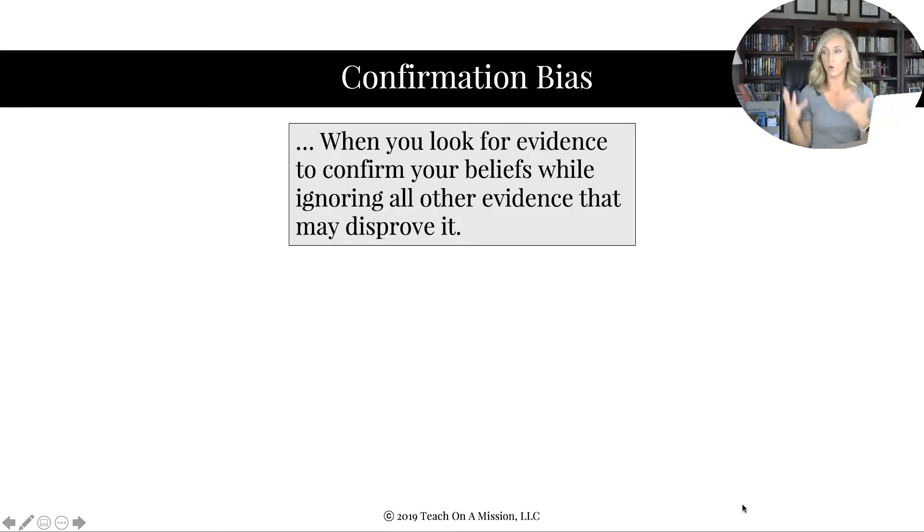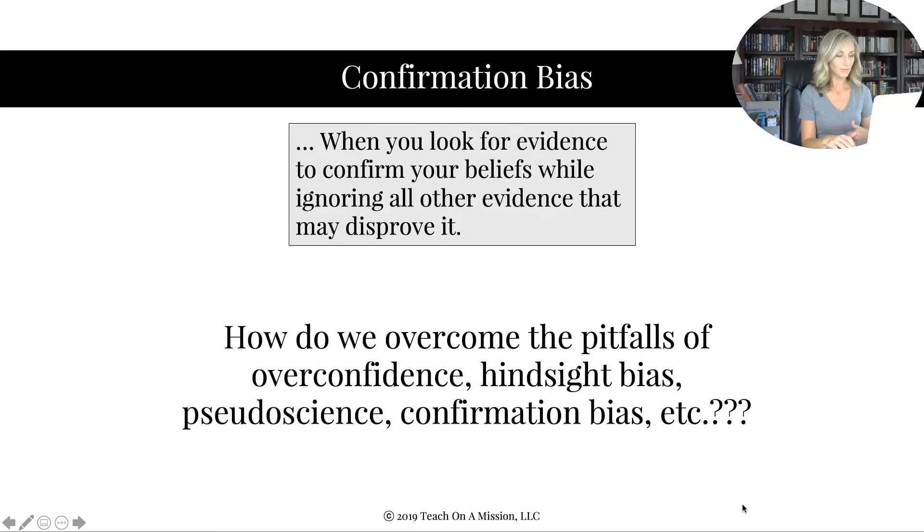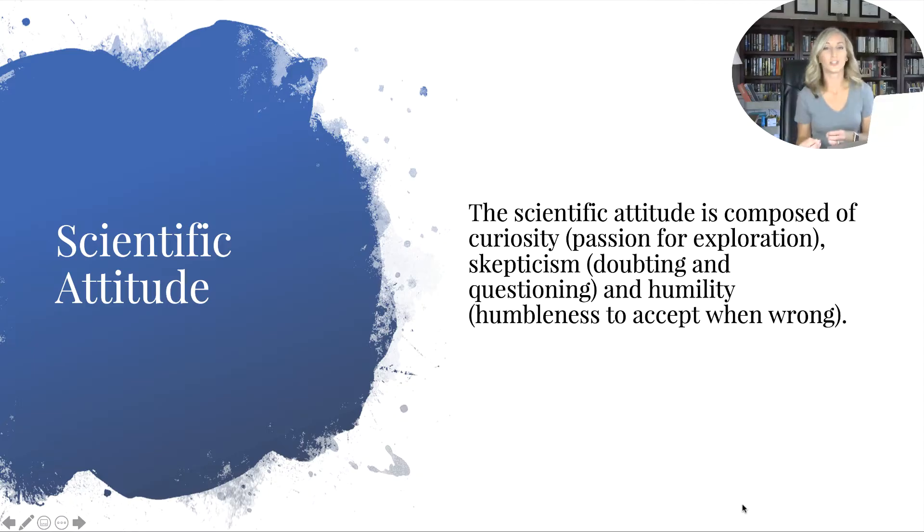So how do we overcome the pitfalls of things like overconfidence, hindsight bias, pseudoscience, confirmation bias—all of that? Well, that's what these notes are all about. A scientific attitude or mindset, you could say, is step number one. This attitude is composed of curiosity—wanting to explore—also skepticism, doubting and questioning things so that you aren't just too gullible, and a bit of humility, humbleness to accept when you're wrong. Really, having that is going to change everything for you so that you are not just a brainwashable figure on this earth. That's pretty much it.